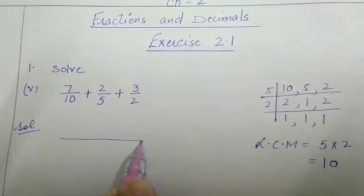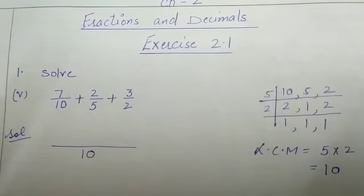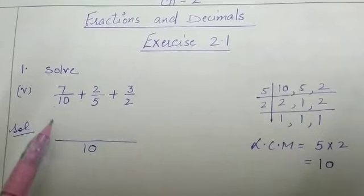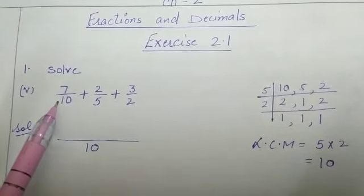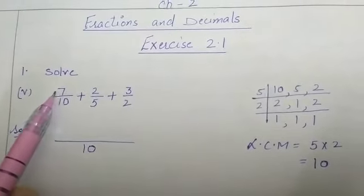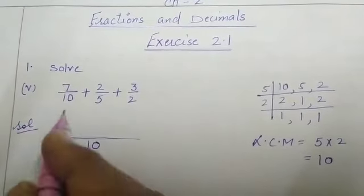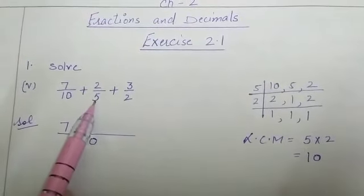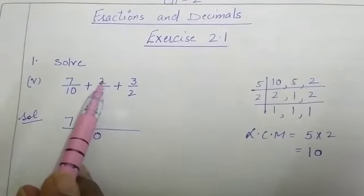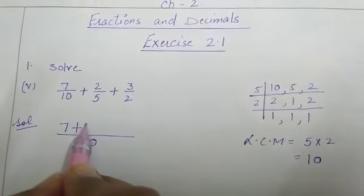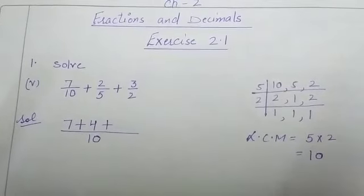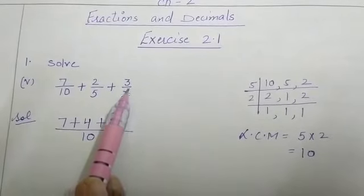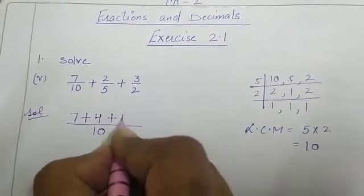Now we will simplify this. LCM is 10. Divide LCM by denominator: 10 divided by 10 equals 1, 1 multiplied by 7 equals 7. Plus, 10 divided by 5 equals 2, 2 multiplied by 2 equals 4. Plus, 10 divided by 2 equals 5, 5 multiplied by 3 equals 15.